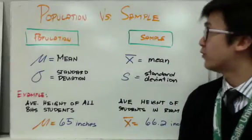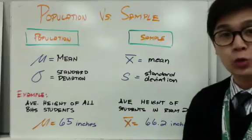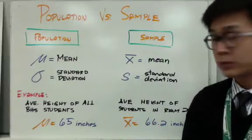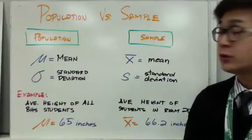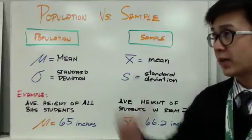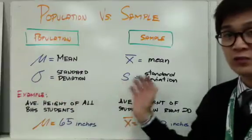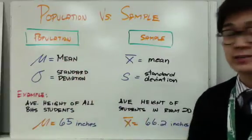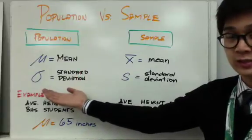Now, population versus sample. In this illustration, I'm showing you two different groups of notation — one for population and one for sample. It's important in statistics that you know how to differentiate a statistical measure from a given population versus a given sample.